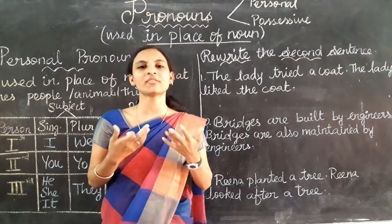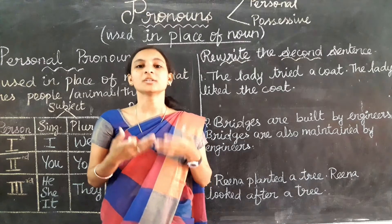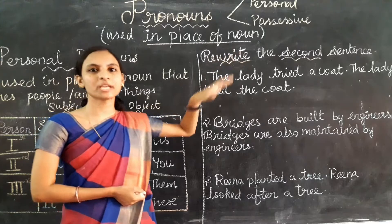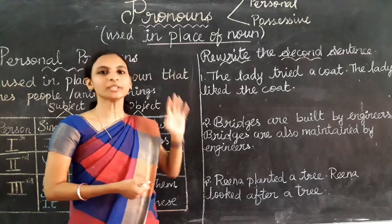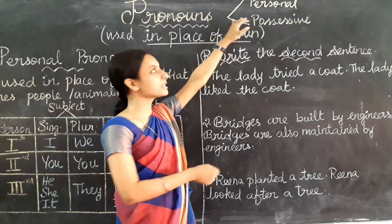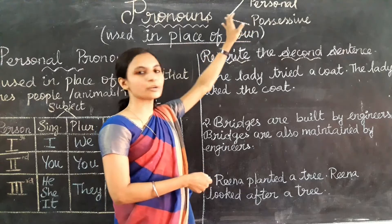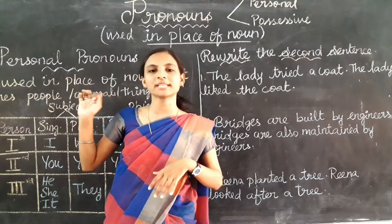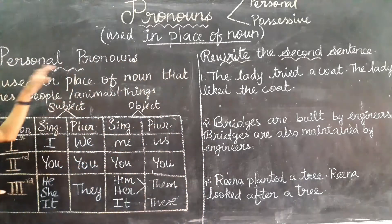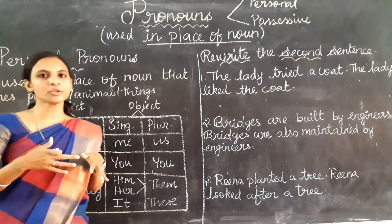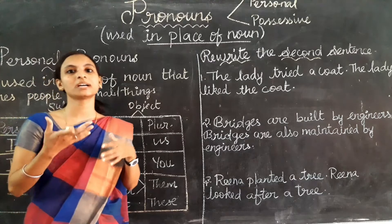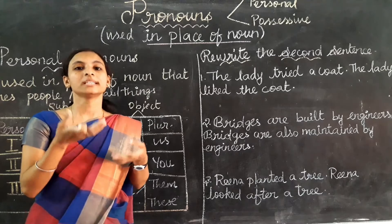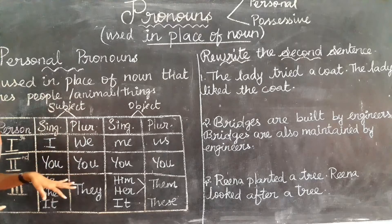Hello children. In the previous video, we have already learnt about pronouns. Pronouns are words used in place of naming words. There are two types of pronouns: personal pronouns and possessive pronouns. In this video, we are going to learn only about personal pronouns, the first type. Personal pronouns are used in place of nouns that tell us the names of people, animals, or things.